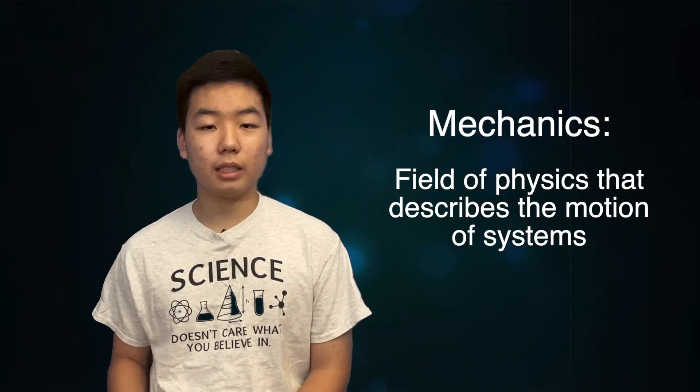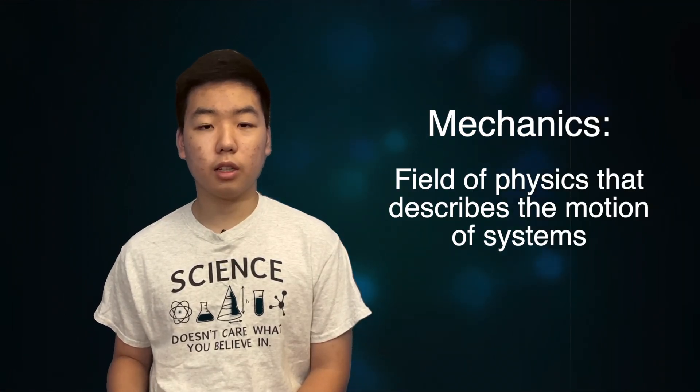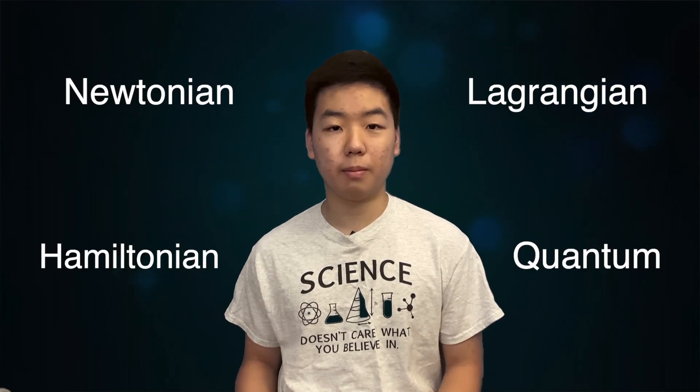What is Lagrangian mechanics? Well, first of all, what is mechanics? Mechanics is the field of physics that deals with describing the motion of systems. And there are many different types of mechanics you can use depending on the situation, such as Newtonian, Lagrangian, Hamiltonian, and quantum.